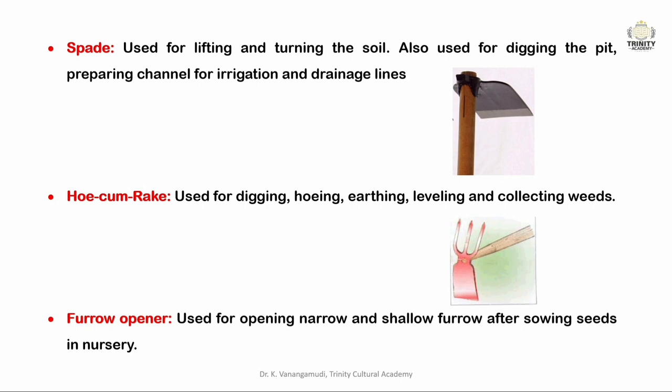Next is the commonly used tool — the spade — used for lifting and turning the soil, digging pits, and also for preparing channels for irrigation and drainage lines. Next is the hoe cum rake, used for digging, hoeing, earthing, leveling, and collecting weeds. It is of rectangular shape with a metal blade with fork-like prongs.